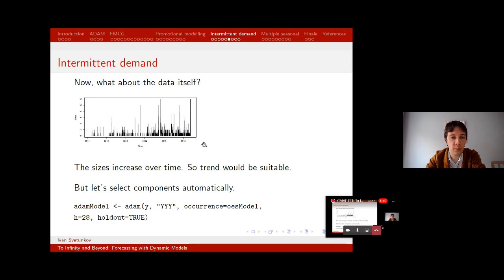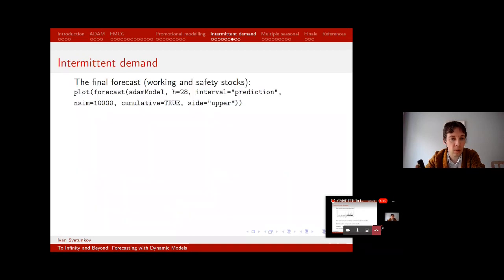But when it comes to demand sizes, then we can tell the function to select from the pure multiplicative models. That's what YYY stands for. Why multiplicative? Well, because we don't want our data to be negative, right? We assume that it is positive. Right, so we fit that model, we produce forecast and I decided to align this task with what typically happens in practice. In practice, when we sell some product and we know that, well, demand is intermittent, and even if it's not intermittent, we are not interested in each specific value for each specific observation. We're interested in getting forecast over some period of time and then forming working and safety stocks based on that. So you order your product today, you will get it in 28 days. Yeah, it's a bit artificial, but so what?